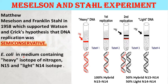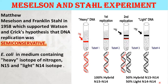First, they grew E. coli in a medium containing the heavy isotope of nitrogen, N-15. The bacteria took up the nitrogen and used it to synthesize new biological molecules including DNA — shown in the first tube as 100% heavy DNA with N-15. Then they switched the E. coli into a medium containing the light isotope, N-14. Tubes 3 and 4 show 50% hybrid N-15/N-14 DNA and 50% light N-14/N-14 DNA, which clearly explains the semi-conservative mode of replication, meaning each strand in the DNA molecule serves as a template for synthesis of a new complementary strand.